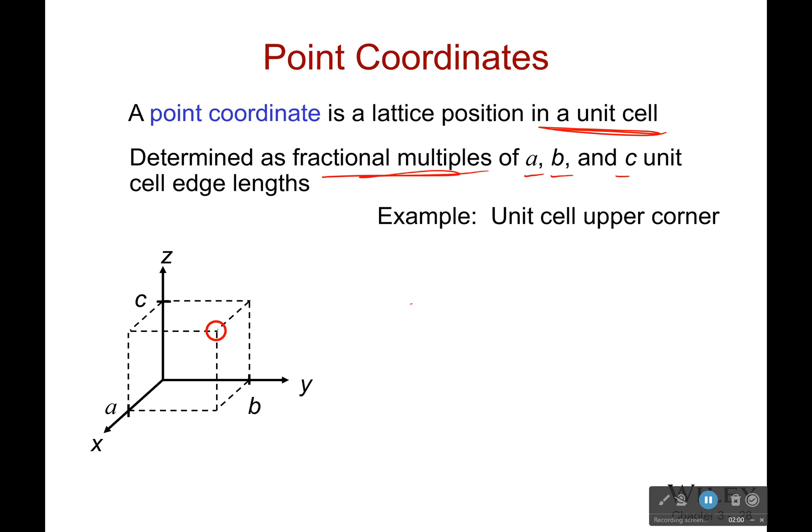Now, I want to find that unit cell in the upper left corner, or sorry, upper right corner. Well, the lattice position would be A, B, C. Now, why is that the case? Well, I went a distance A along the X-axis, then a distance B along the Y-axis, and then a distance C parallel to the Z-axis. I shouldn't really say along because I'm not technically on that Y-axis, but going in the same direction as it. So, I went A, B, C to get there.